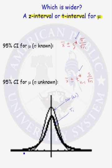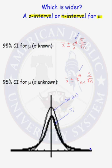Let's recall the differences between a standard normal distribution and a t distribution. I have graphed the normal(0,1) distribution compared to a t distribution with 1 degree of freedom. A t distribution is symmetric like the normal distribution, but it has heavier tails.